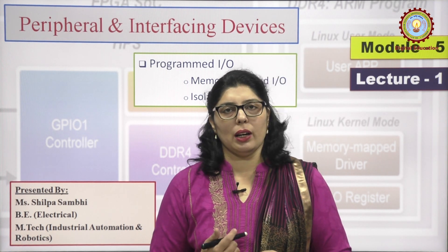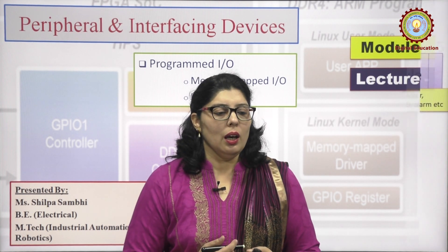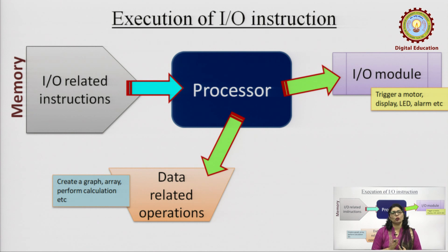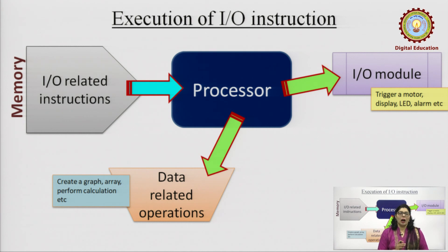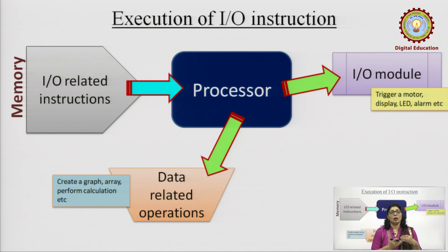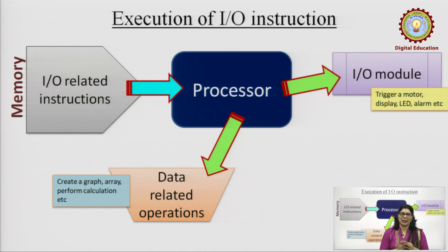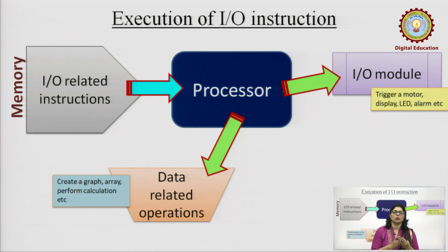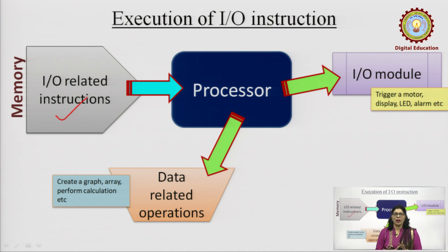Let us see what peripheral and interfacing devices have to say. First, let us understand how the execution of an I/O instruction takes place. An I/O instruction is basically an input-output instruction — if we are taking input from a sensor, or giving output to a motor, buzzer, or LED. We need to understand that all instructions, whether memory-related or I/O-related, are all stored in memory.